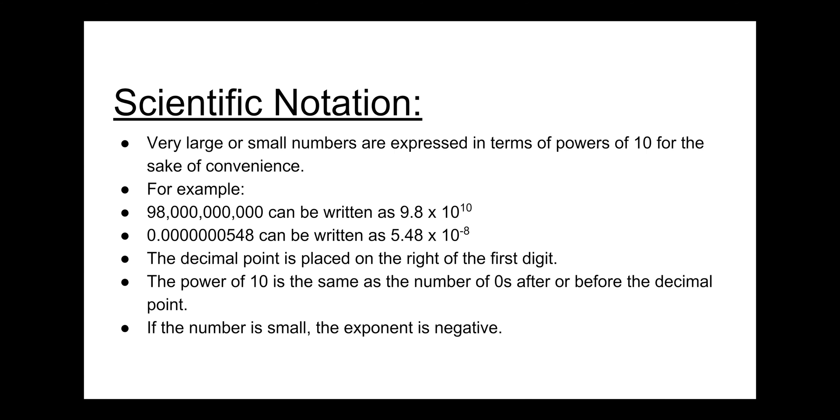Scientific notation. Very large or small numbers are expressed in terms of powers of 10 for the sake of convenience. For example, the number 98 billion is written as 9.8 times 10 to the 10. The decimal point is placed on the right of the first digit. The power of 10 is the same as the number of zeros after or before the decimal point.